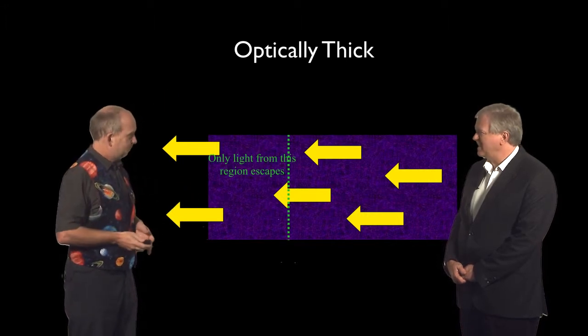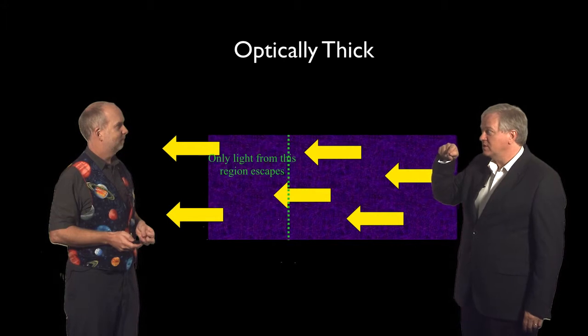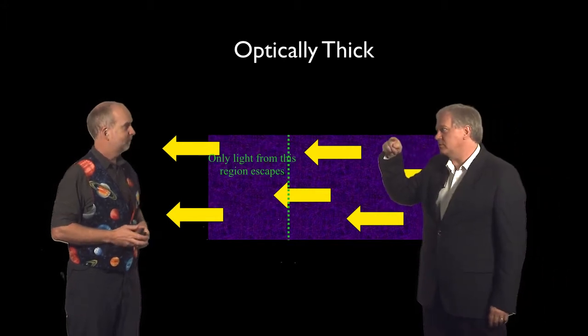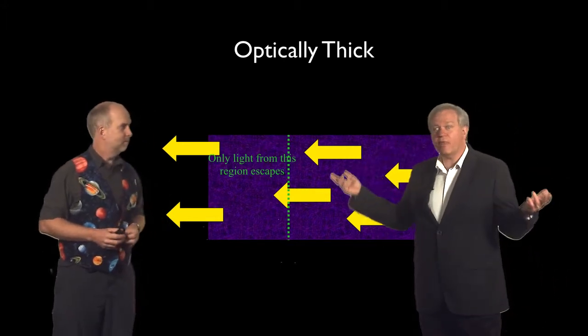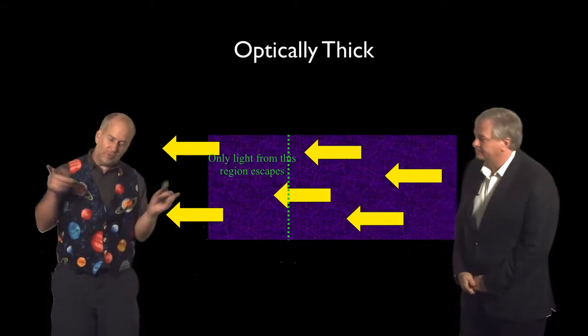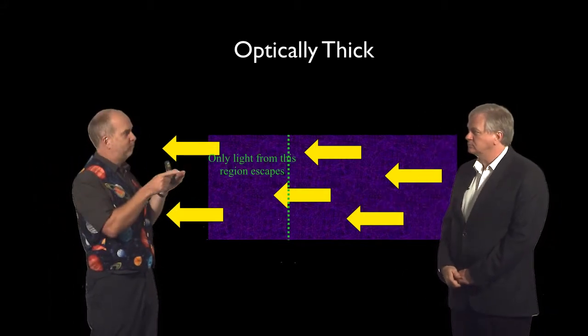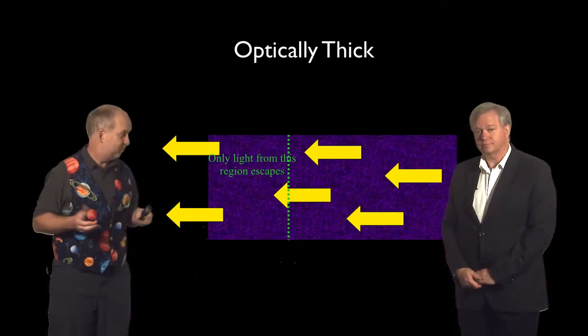So then you wouldn't see anything, right? You'd produce something—yee-haw!—but then you'd run into another atom and yee-haw, and you'd end up with nothing. So you can think about how far on average a photon is going to get before it gets absorbed, and that will depend on the density of the gas.